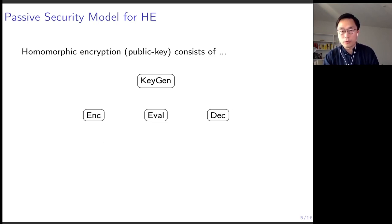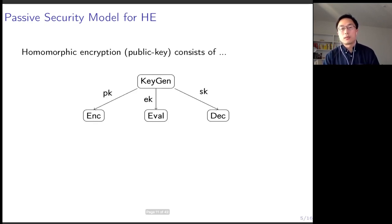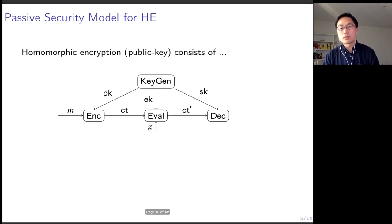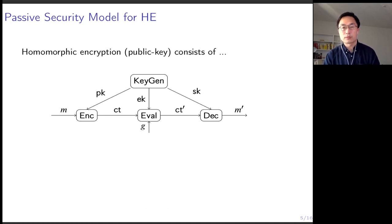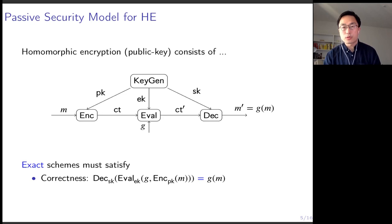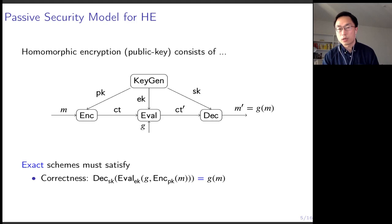To answer that question, let's look at homomorphic encryption as a formal object. Formally, a homomorphic encryption scheme consists of four algorithms. You can use the key generation algorithm to generate a set of keys. The party with the public key can encrypt a message, and another party with the evaluation key can homomorphically evaluate a circuit to get another ciphertext. Finally, the secret key holder can decrypt the final ciphertext to learn the final computation result. For exact schemes, the very first requirement is correctness: the decryption of a homomorphically evaluated ciphertext must return something as if the computation was carried out in plaintext.